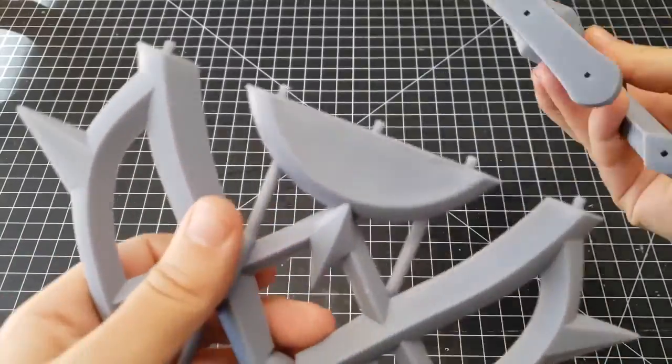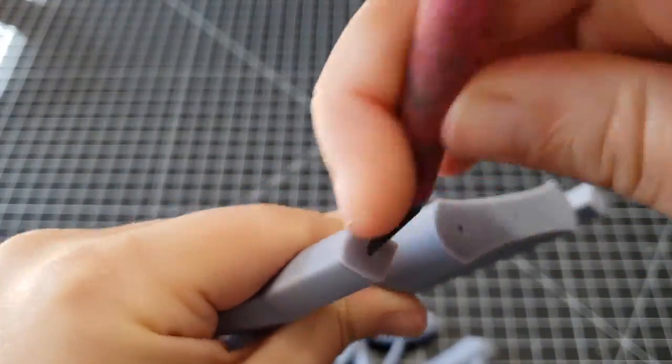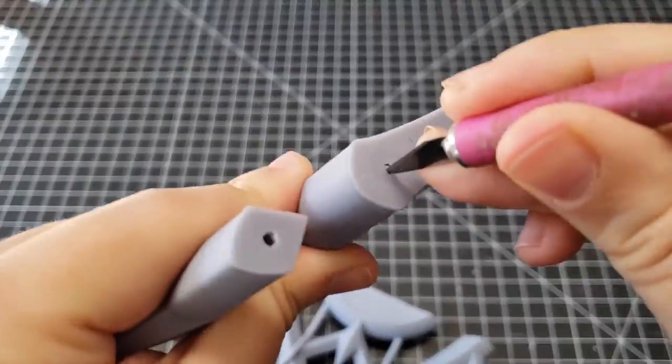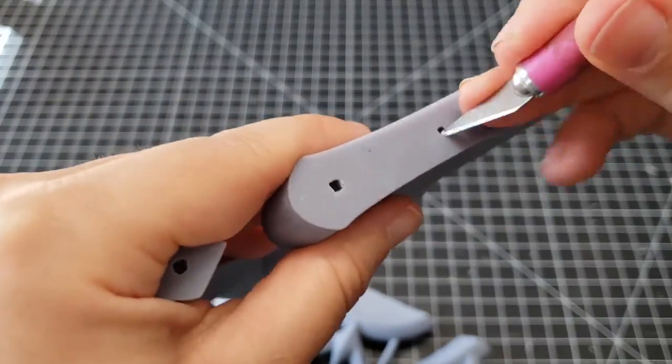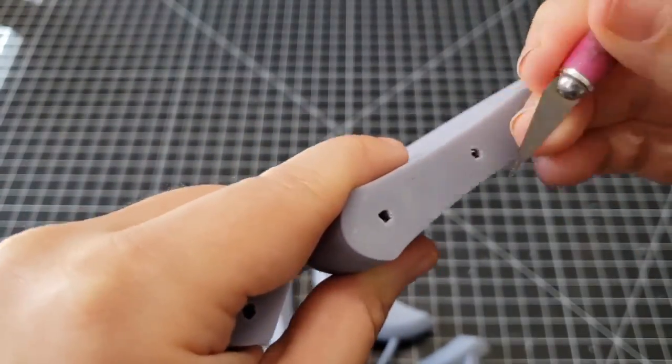These are the pegs to assemble it together as a guide so it doesn't shift around when I am fusing these pieces together. It's going to help keep that structure.